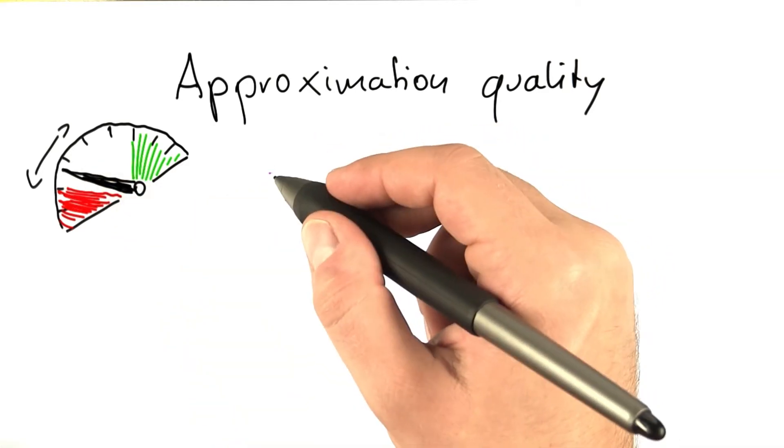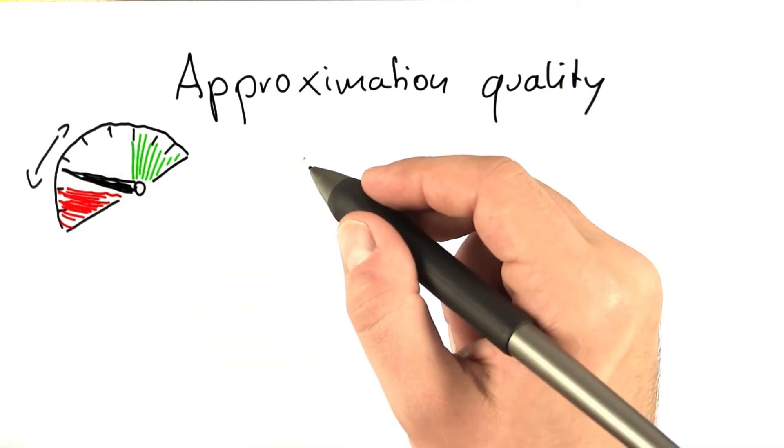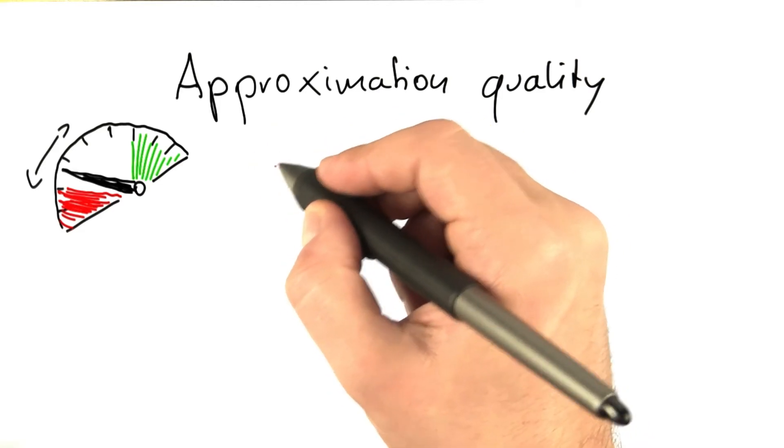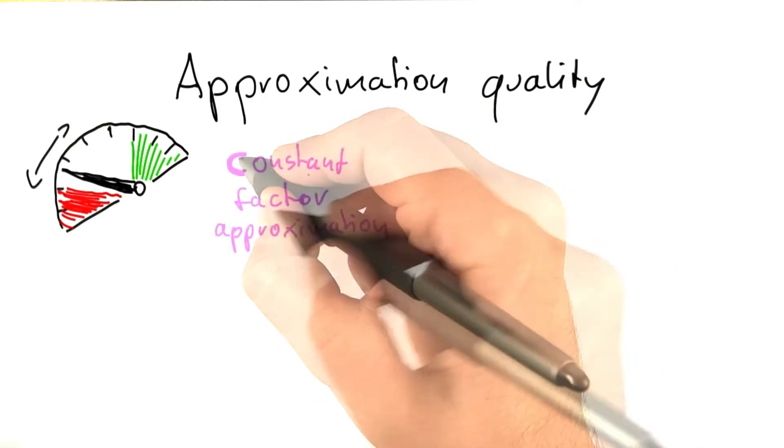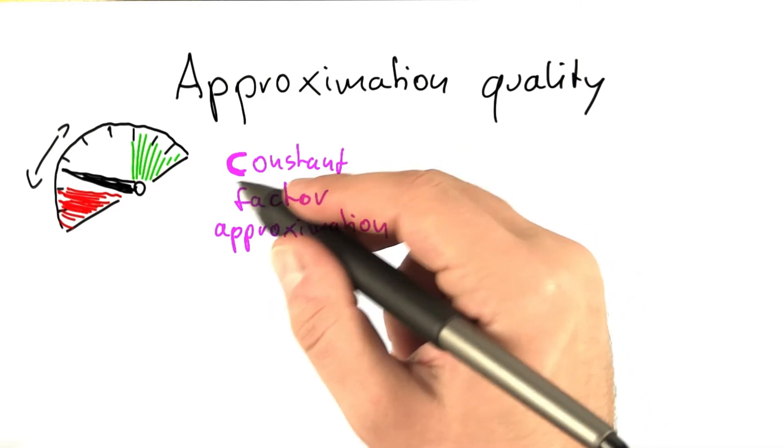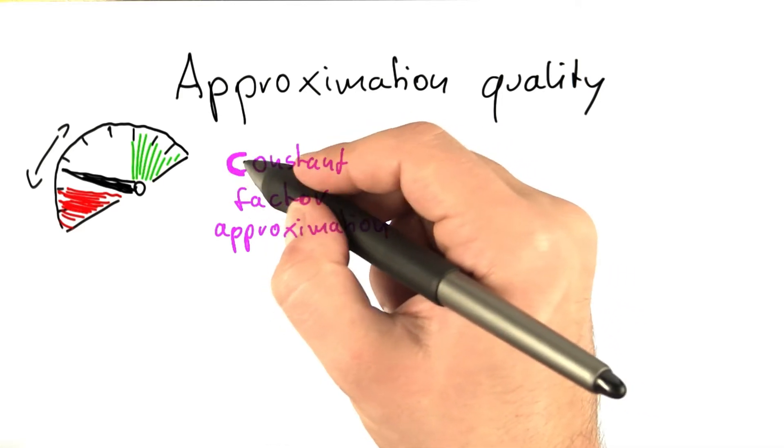And we'll be looking at two different types of approximation algorithm in this unit. The first one is called a constant factor approximation. And what a constant factor approximation is, well, as the name says, there's some constant c.